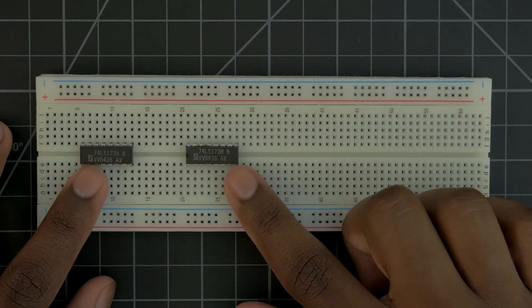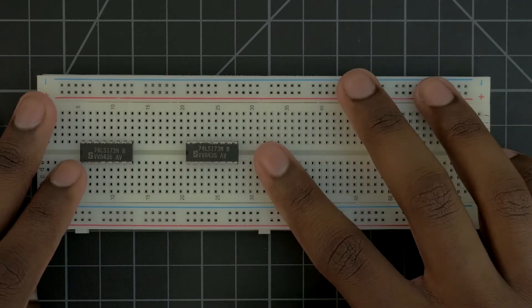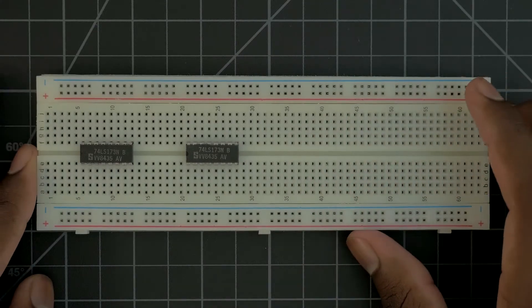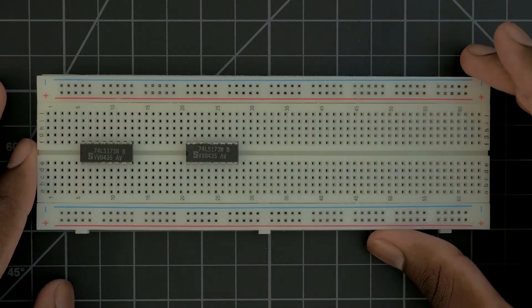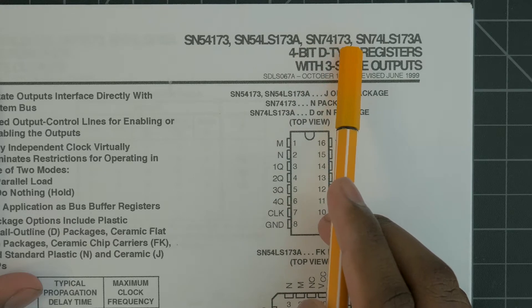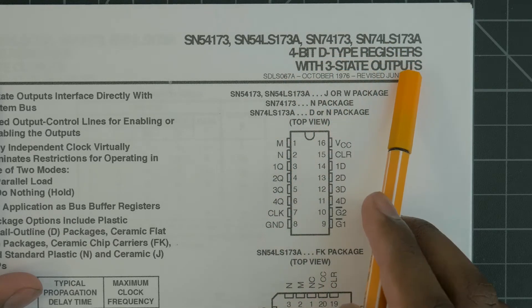Now each of these chips is a 4-bit register. So we're going to use them in combination to make a single 8-bit register. And we're also going to put an LED array over here so that this way we can see what's constantly in this register at all times. So let's go over how we hook this up. Okay, so the chip that I'm using is the SN74LS173, and it is a 4-bit D-type register with three-state outputs.